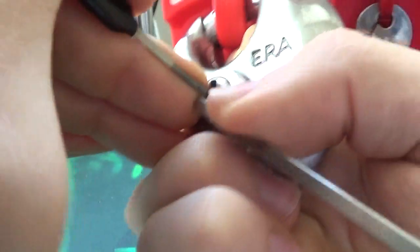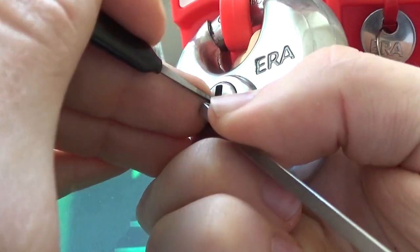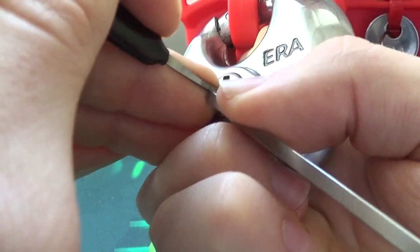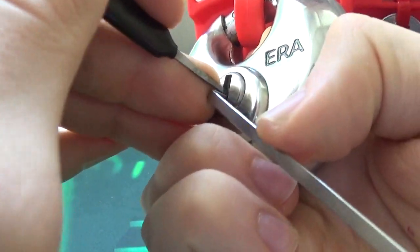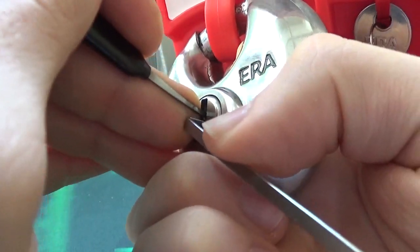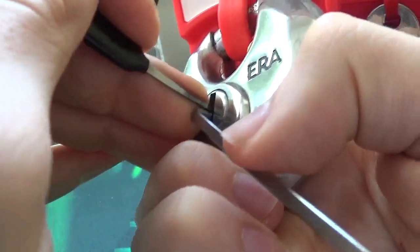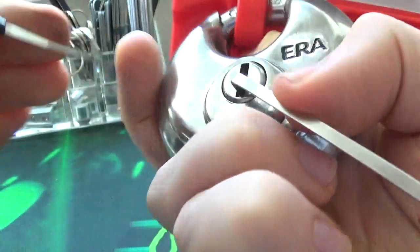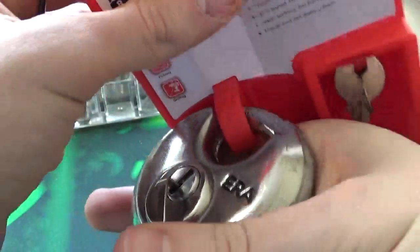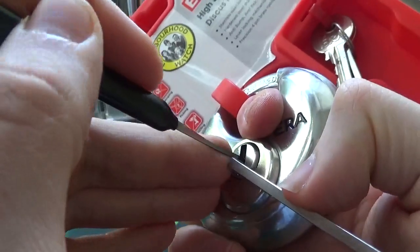If this was being attacked in the wild, I believe it would probably be more likely attacked with an angle grinder or saw because they would be faster than this anyway, and it requires no skill. So I think this pick resistance appears to be pretty adequate.